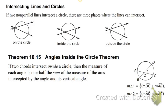Okay, so we're going to move on. The next couple theorems are a little bit different, probably a little bit more challenging than the past theorems, but I know you guys got this. So, intersecting lines and circles. If two non-parallel lines intersect a circle, there are three places where the lines can intersect. They can intersect on the circle, they can intersect inside the circle, not necessarily at the center, just somewhere, anywhere inside the circle, or they can intersect outside the circle.